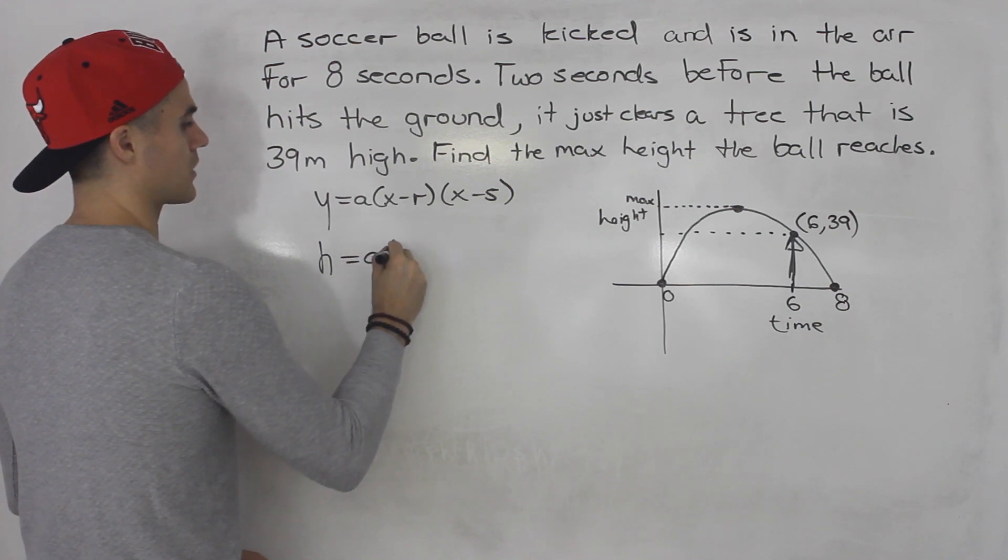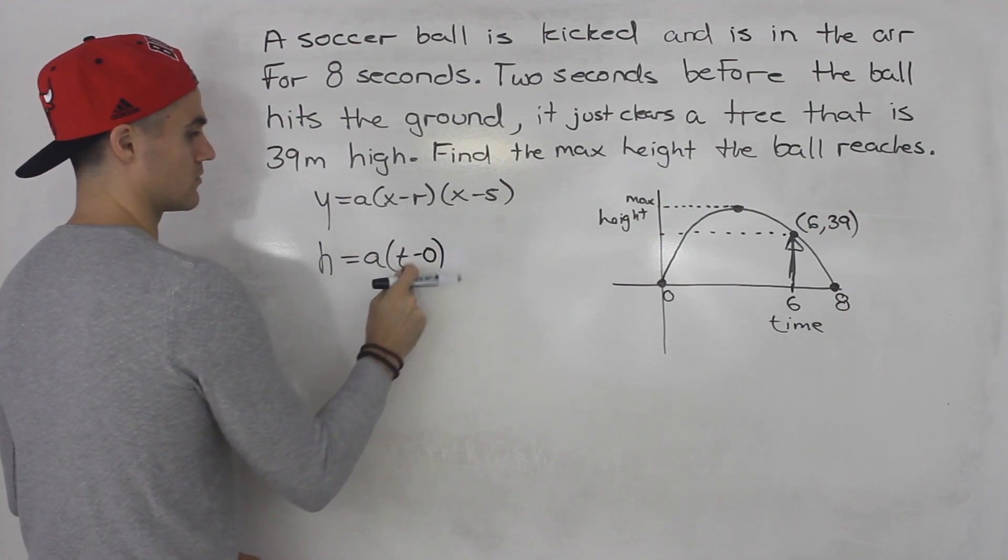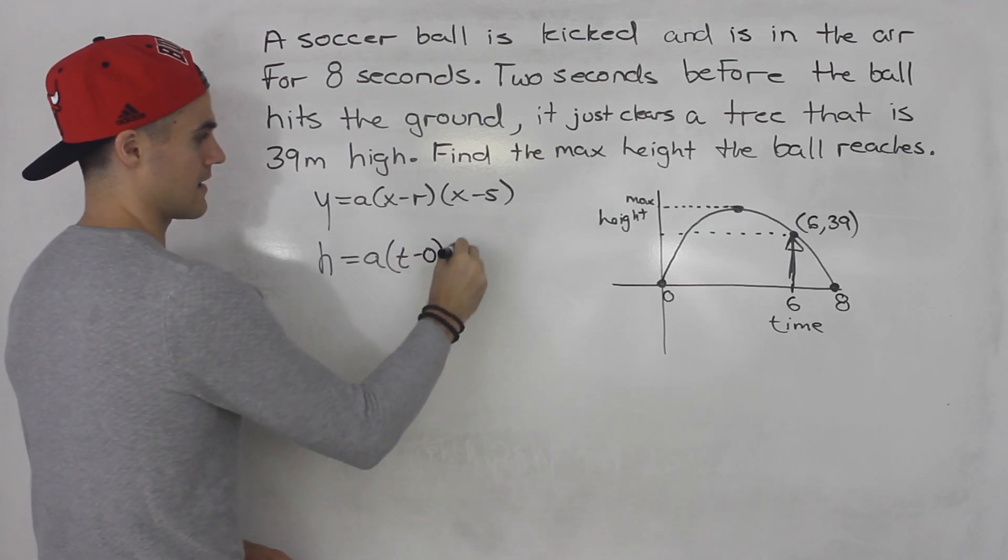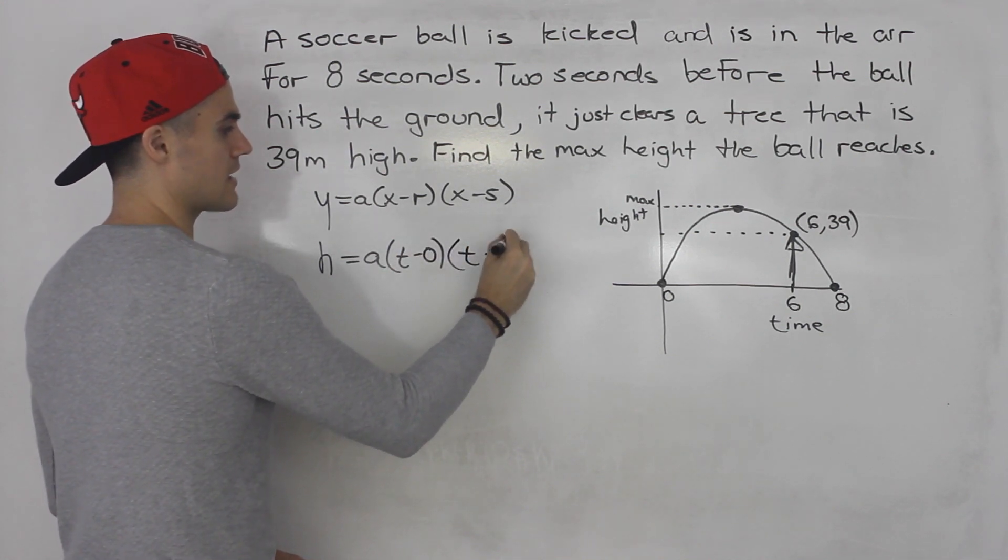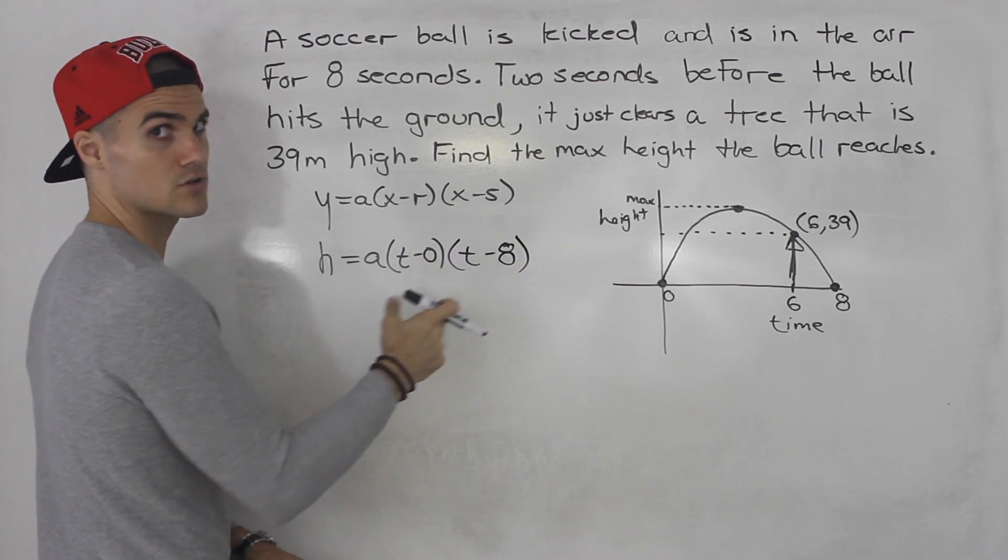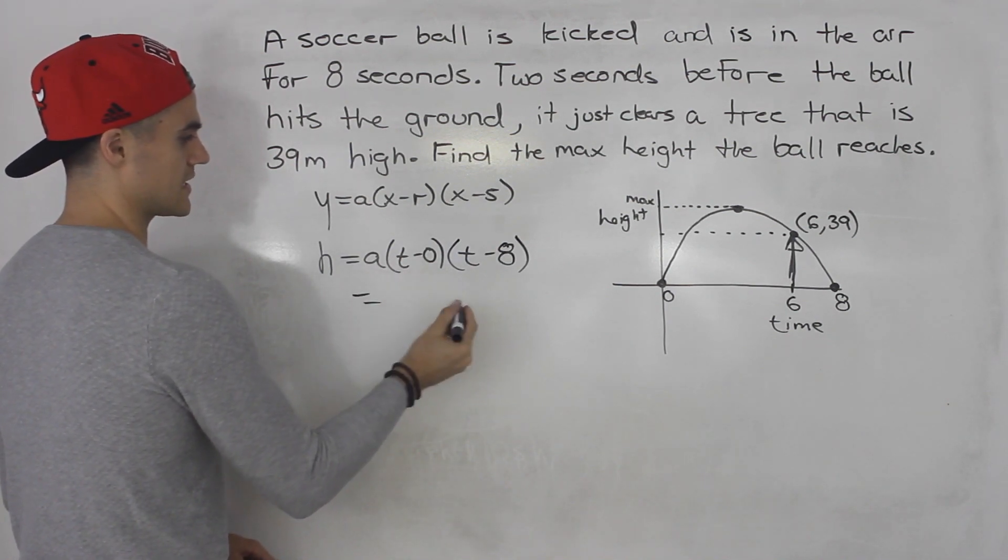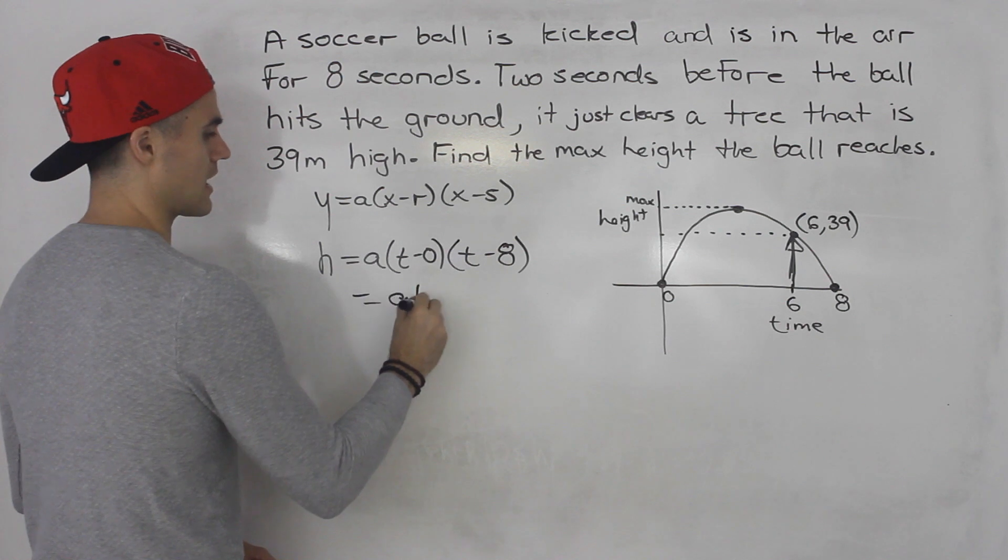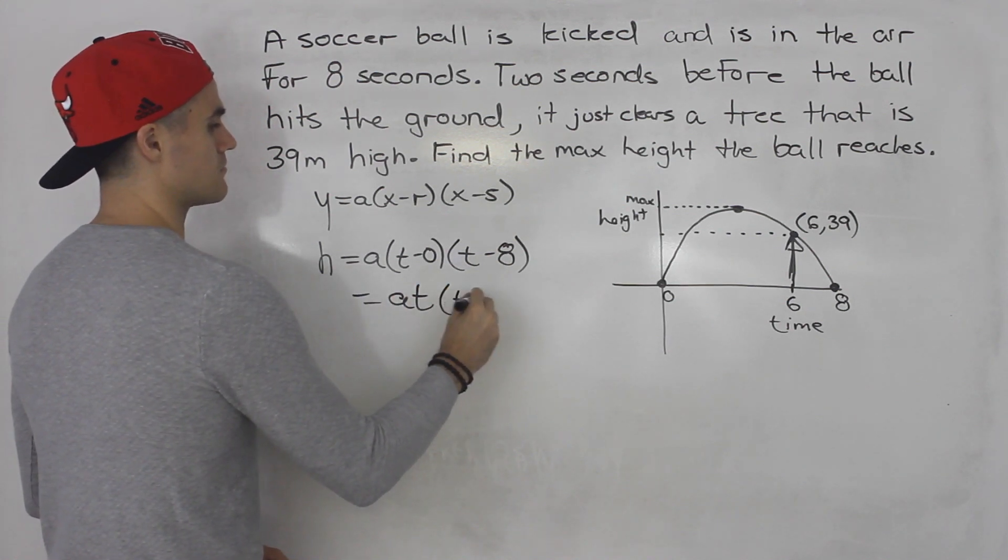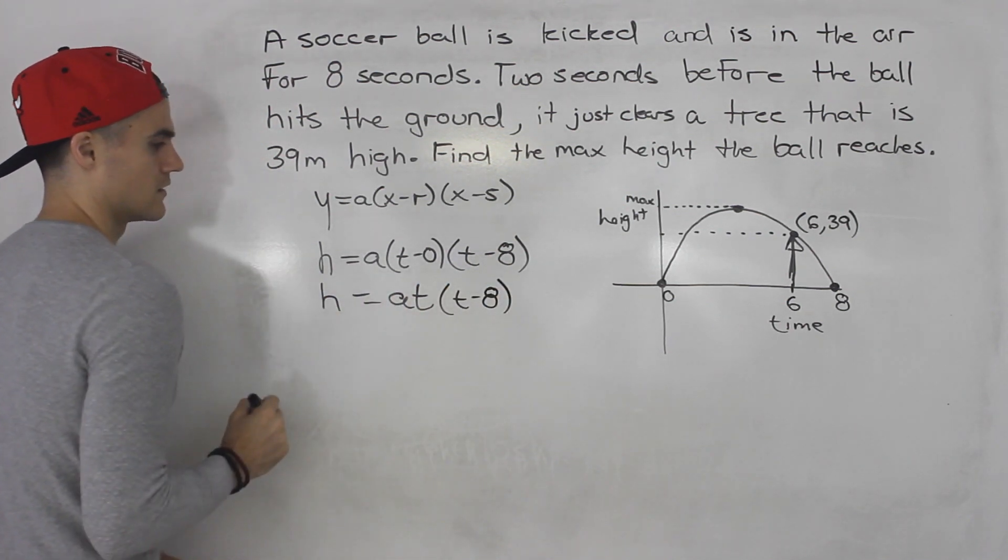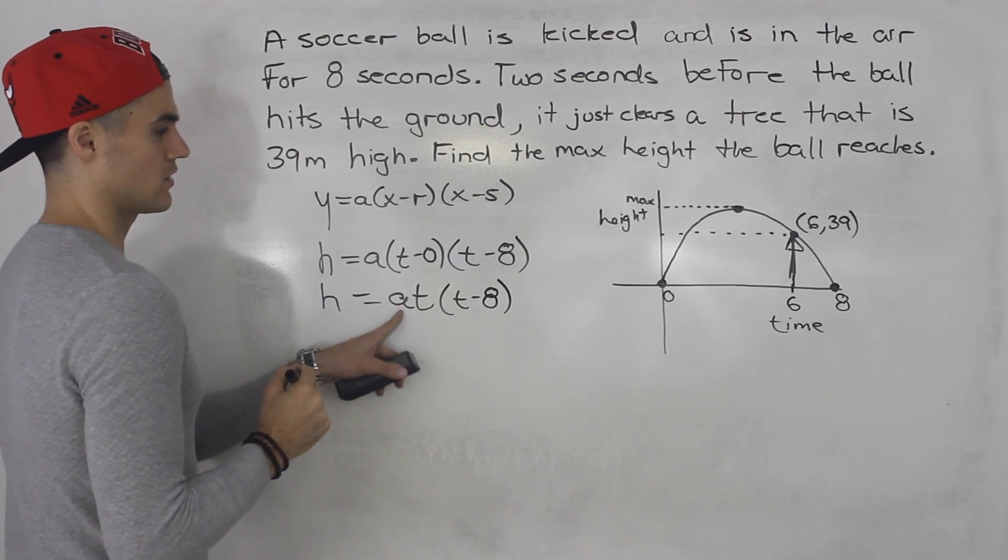This is a and then we're going to have t minus zero, right? So instead of x, I put t for time. And then t minus eight. Zero and eight, those are the two intercepts. Now t minus zero is just t. A times t, that's like at. This is t minus eight. So we've got to solve for this a value here.